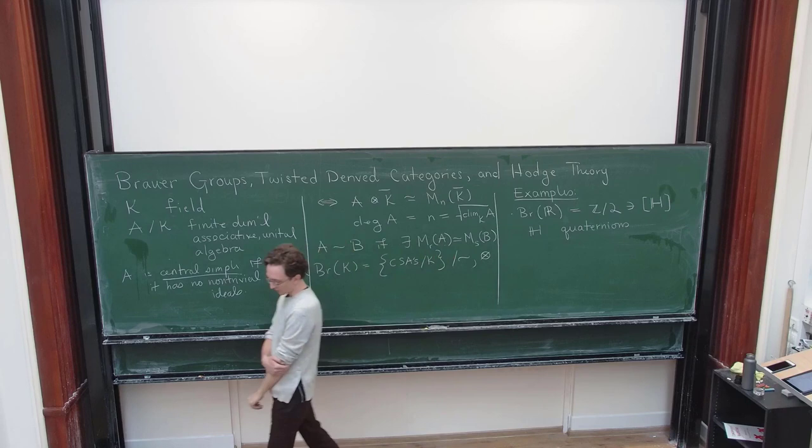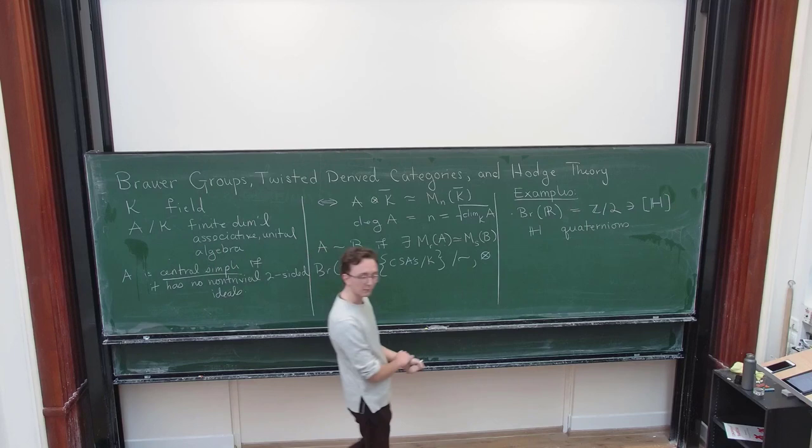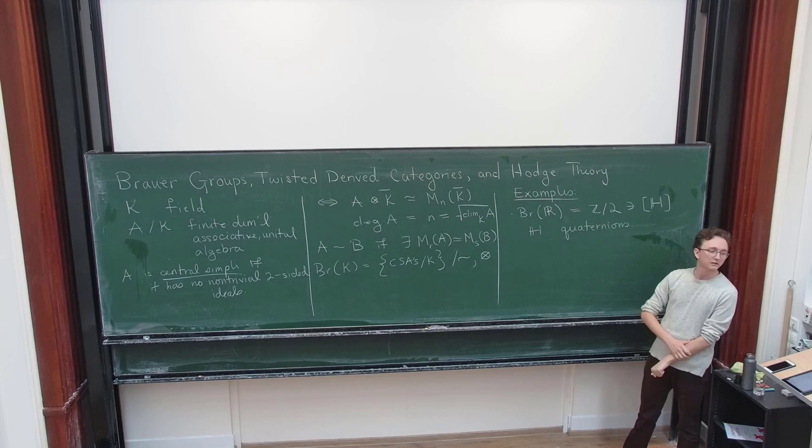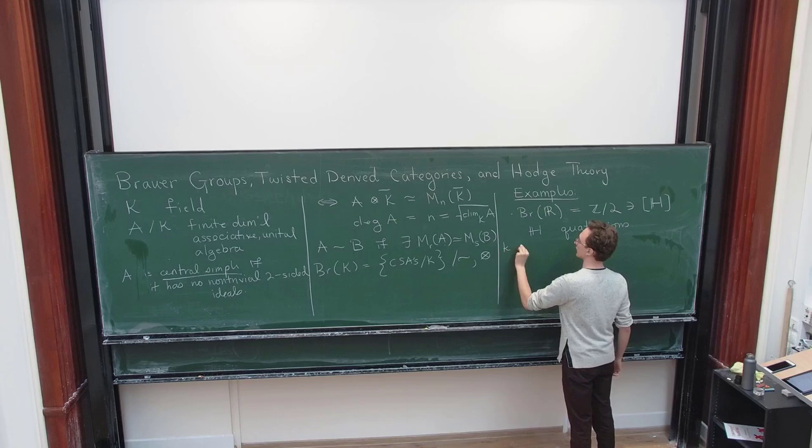So this is not really the kind of, at this point you could go off and talk about Brouwer groups of like local and global fields, which is a very large topic. But I'm going to aim for something slightly different. I'm going to be talking about Brouwer groups of function fields of varieties.